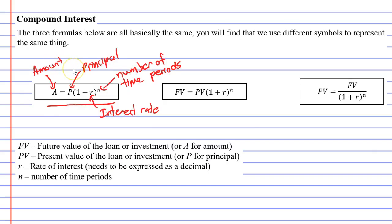our principal would have been $1,000. The number of our time periods would have been two years. The interest rate was 10%, and the amount would have been $1,210, because after two years, this is what it accumulated to.